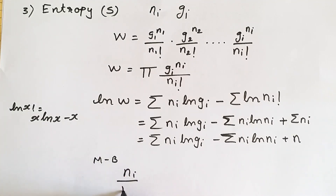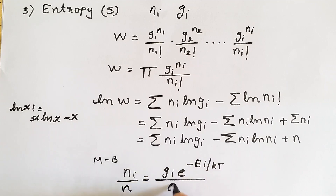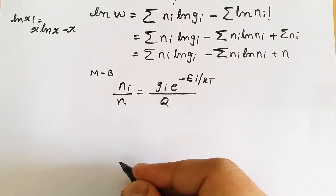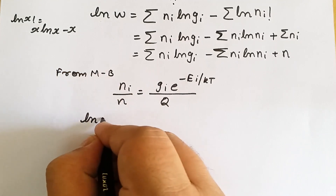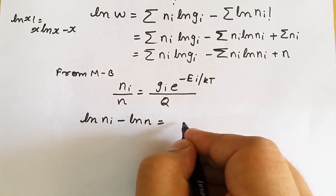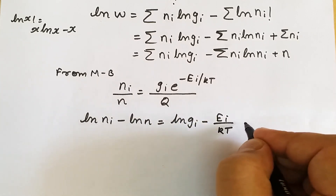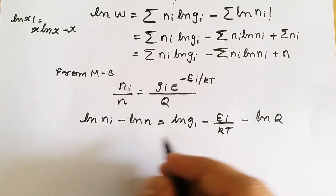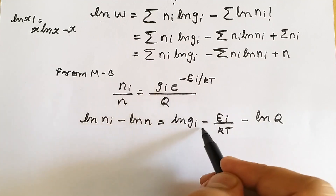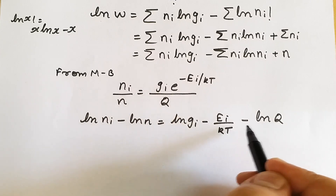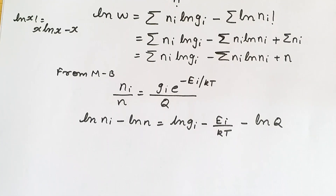From the Maxwell-Boltzmann equation we can write Ni/N equals gi·e raised to minus Ei upon kT, divided by Q, where Q is our partition function. Taking the logarithm of this relation, we get: ln(Ni) minus ln(N) equals ln(gi) minus Ei upon kT minus ln(Q). The exponential and logarithm cancel, leaving minus Ei upon kT, and the division gives minus ln(Q).